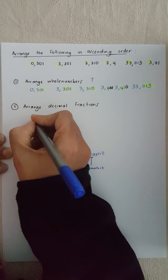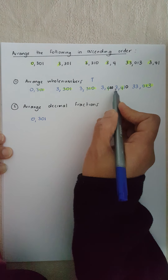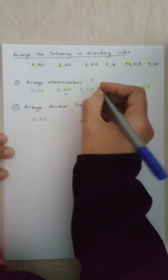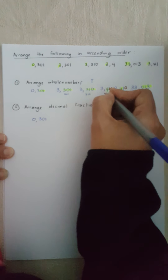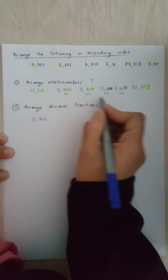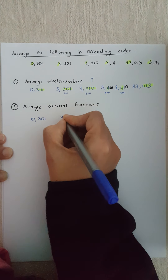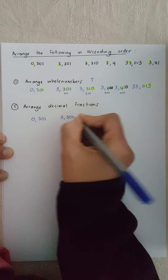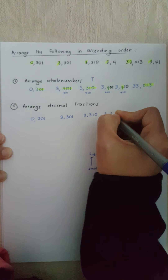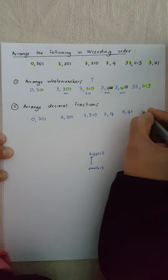Obviously this number stays first because the whole number is zero, so my first number is 0,301. Now I need to compare all the decimal fractions with the same whole number — they all have three. I need to order them from smallest to biggest: 301, 310, 400, and 410. That's already in order — that was just coincidence, you have to check it. So my order would be 3,301 then 3,310 then 3,4 and then 3,41.